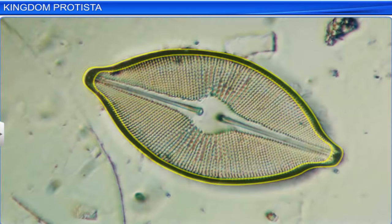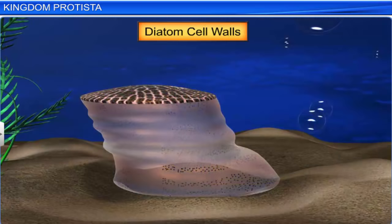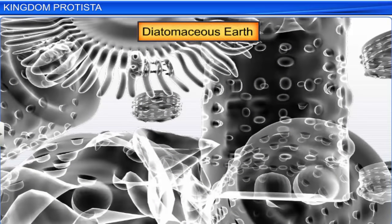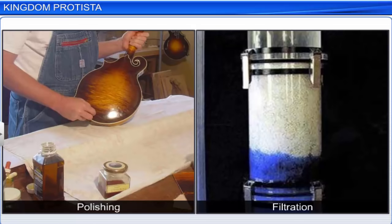Diatom cell walls are embedded with silica, making them indestructible. Diatoms therefore leave behind large amounts of their cell wall deposits in their habitats. These fossilized remains of diatoms form diatomaceous earth. It can be put to various uses like polishing and filtration of oils and syrups.